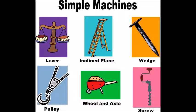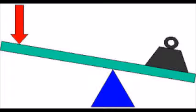They are the lever, the wheel and axle, the pulley, the incline plane, the wedge, and the screw. So let's first go over the lever. A lever consists of three things: a fulcrum, the force which you apply, and the load that you're trying to move.